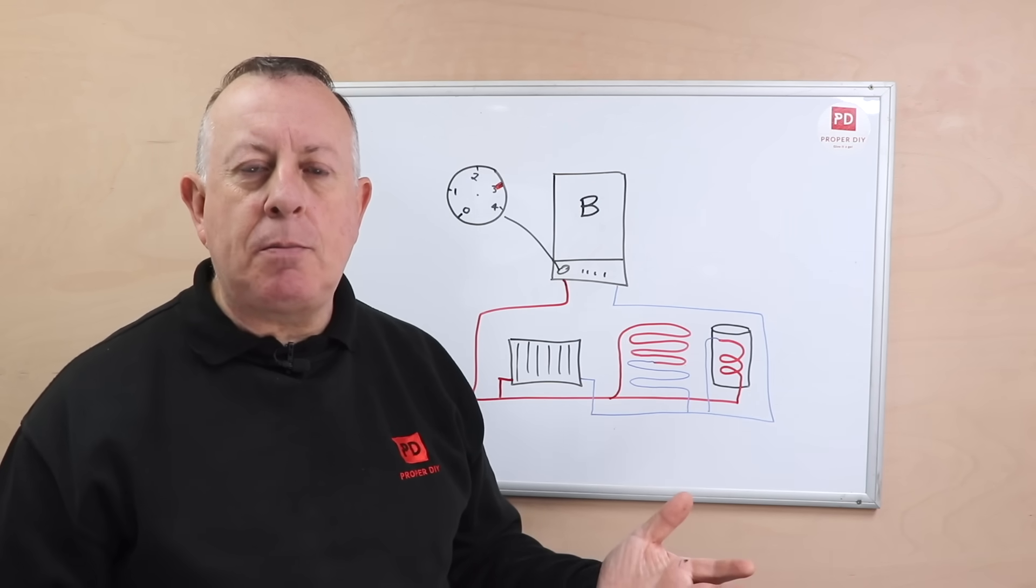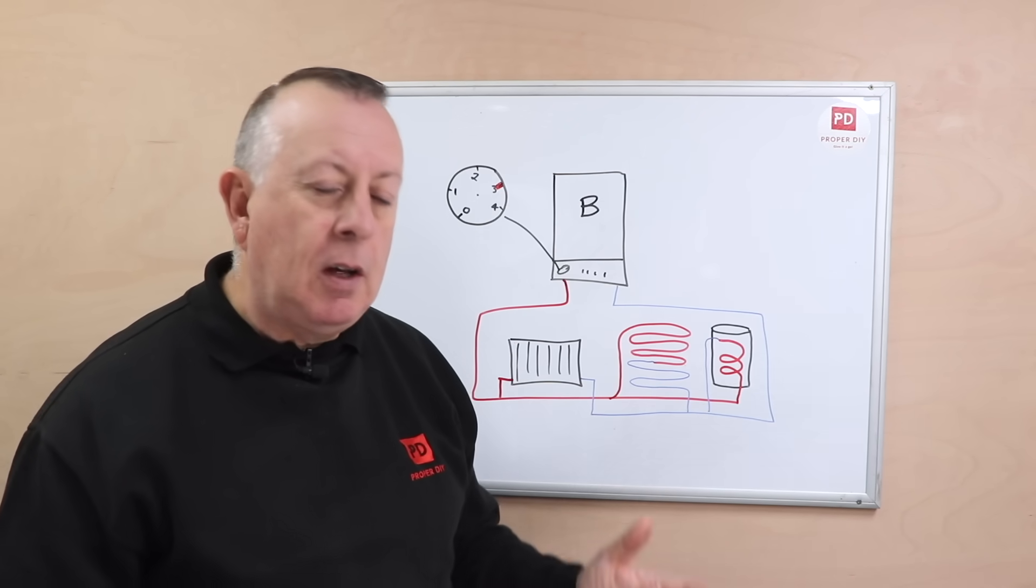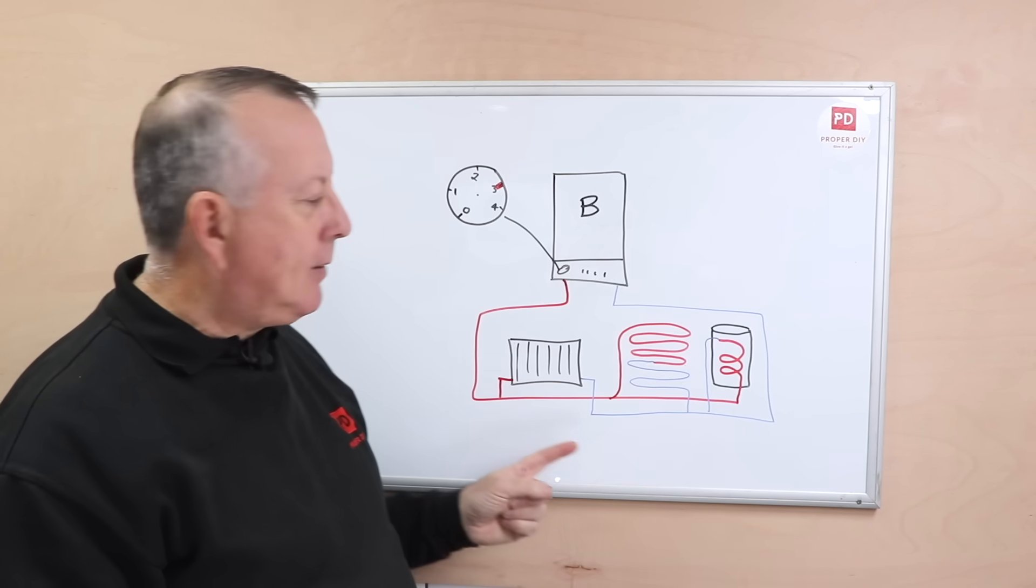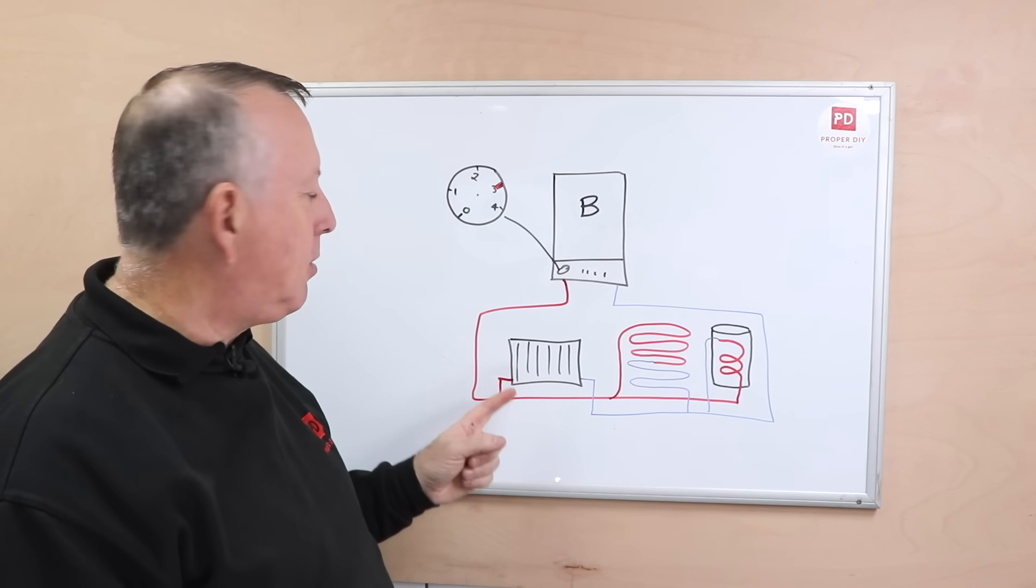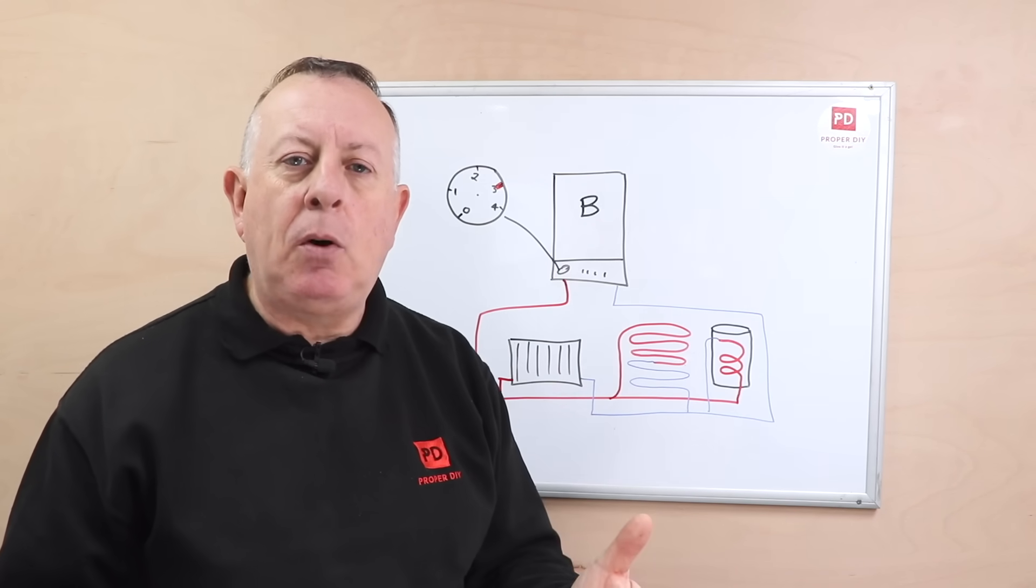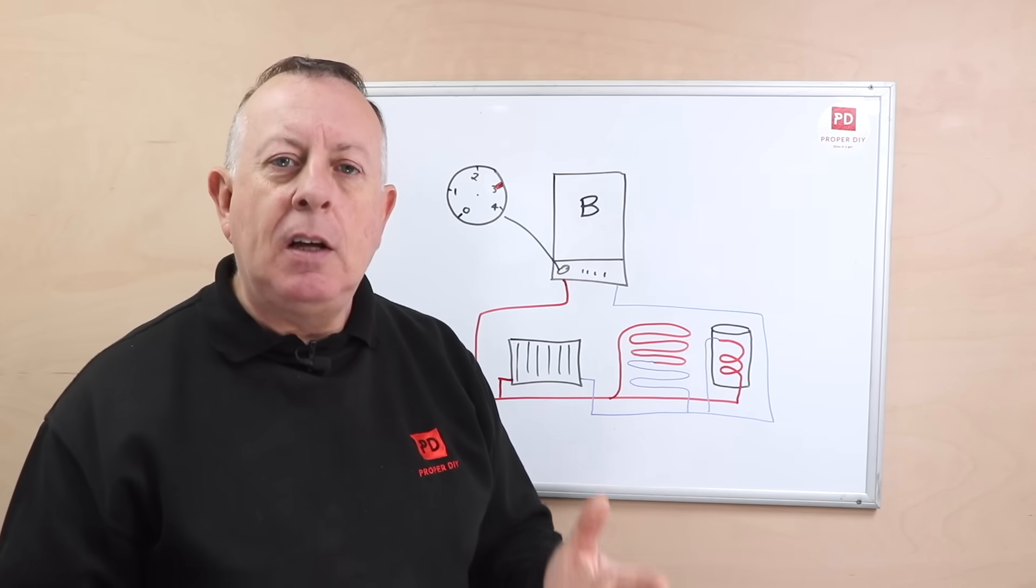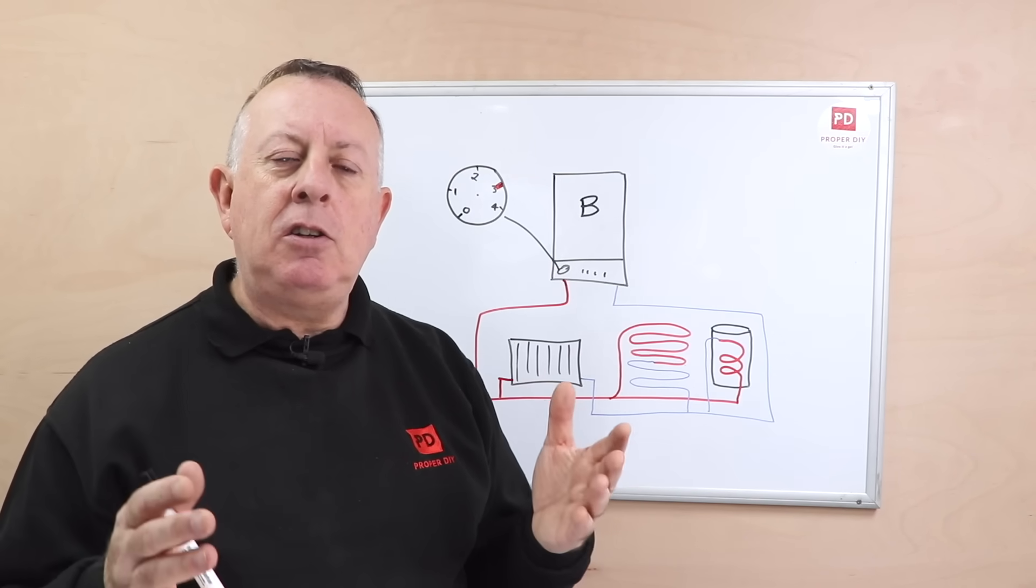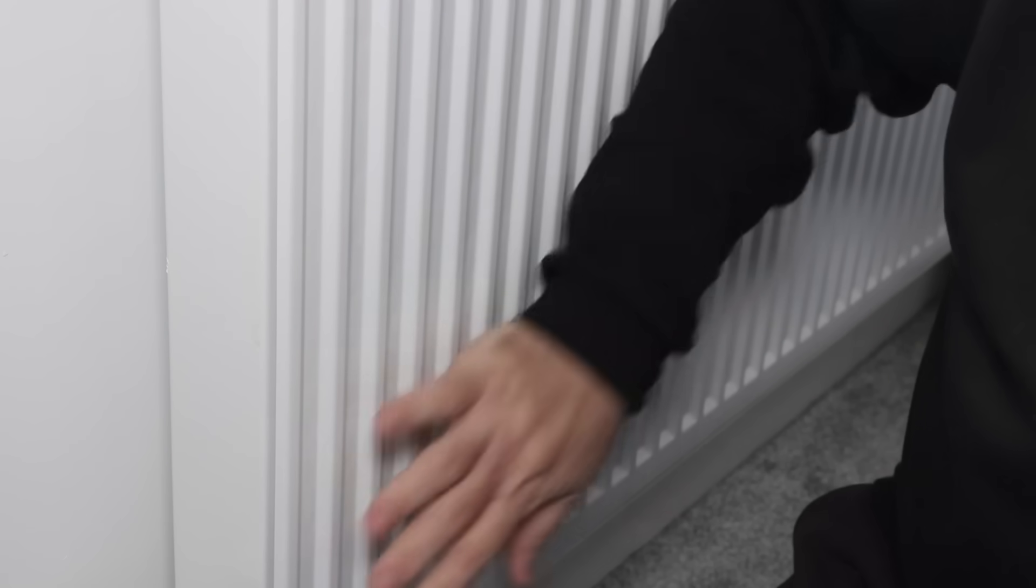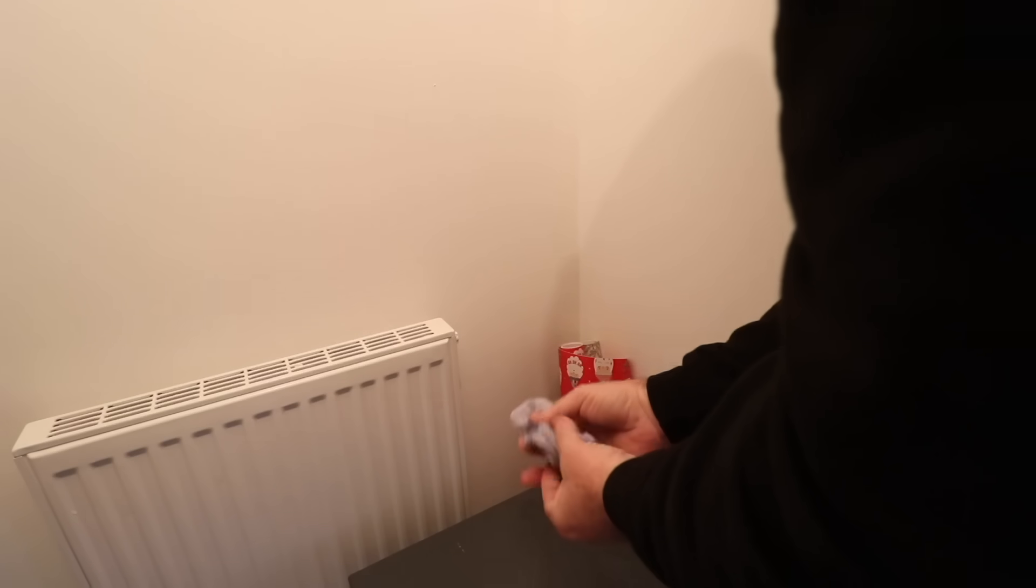So where do we lose the pressure when we're not bleeding radiators? Well the first obvious cause is if we've got any leaks in this system - any leaks around radiators or any of our pipework. So it's really important if you think you've got a problem that you go around your house and you look at each radiator and all the pipework you can find looking for any leaks or drips.